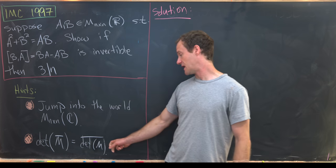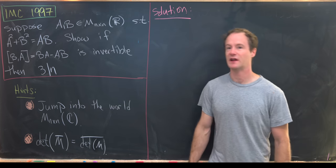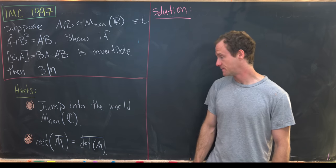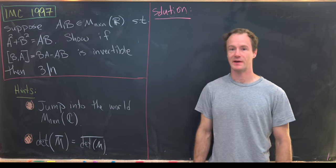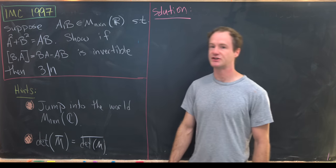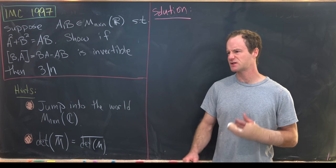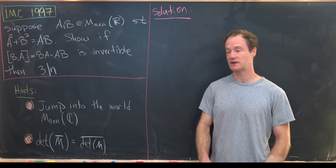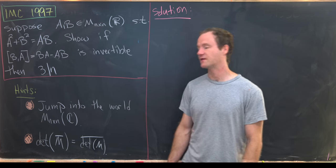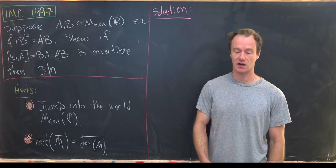And then the next hint is built off of this one. And that is the determinant of the complex conjugate of a matrix is the complex conjugate of the determinant of that matrix. So there's some nice commutativity relation between taking the determinant and taking the complex conjugate.